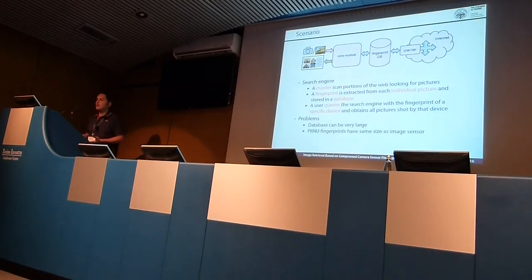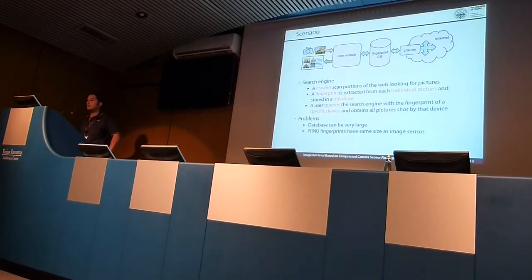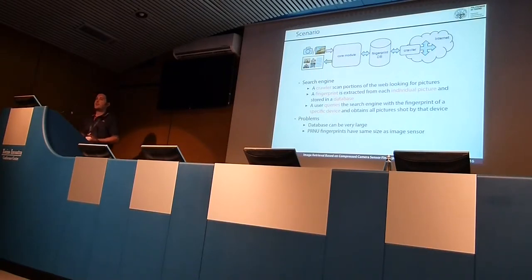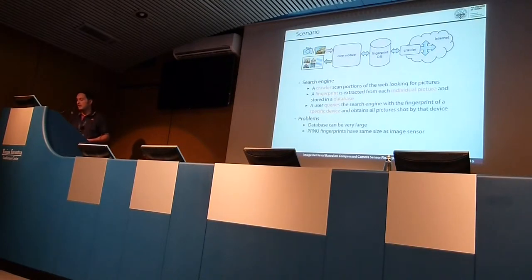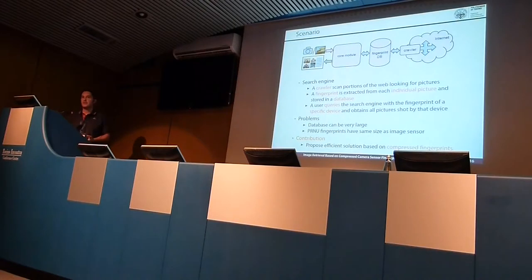Realizing a search engine like this poses a number of practical problems. First, the fingerprint dataset can be very large — millions, tens of millions, hundreds of millions, even billions of pictures in a realistic setting. Moreover, PRNU fingerprints have the same size as the sensor — the same size as a full-frame picture — making this huge dataset very difficult to manage. In this work, we show that our contribution is an efficient solution for implementing this camera search engine using our proposed compressed fingerprints.